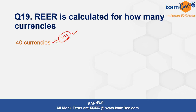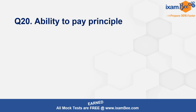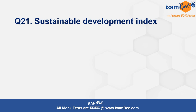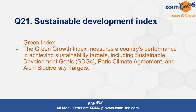The ability-to-pay principle is based on income and wealth — the more income and wealth you have, the more tax you are able to pay. On sustainable development index — the correct answer is the Green Growth Index, which measures how sustainably countries achieve the Sustainable Development Goals.